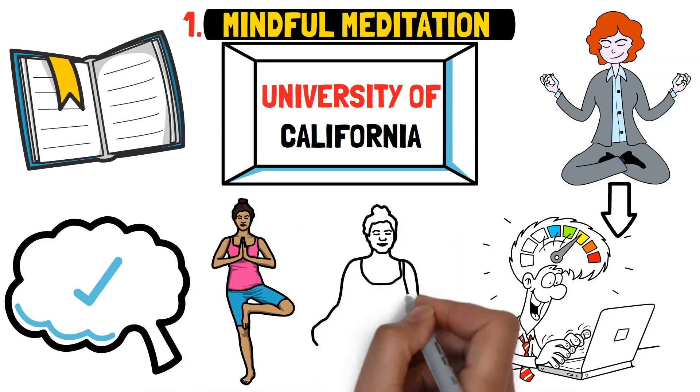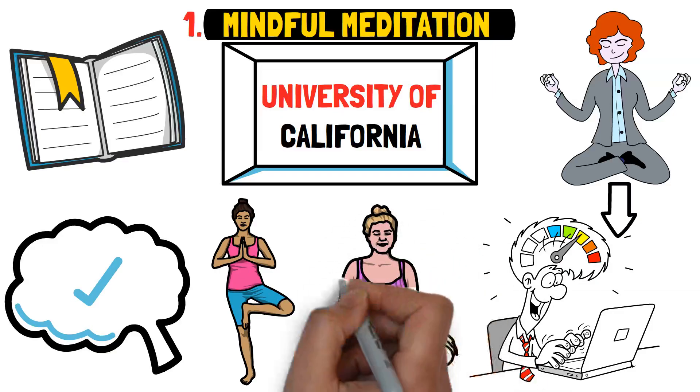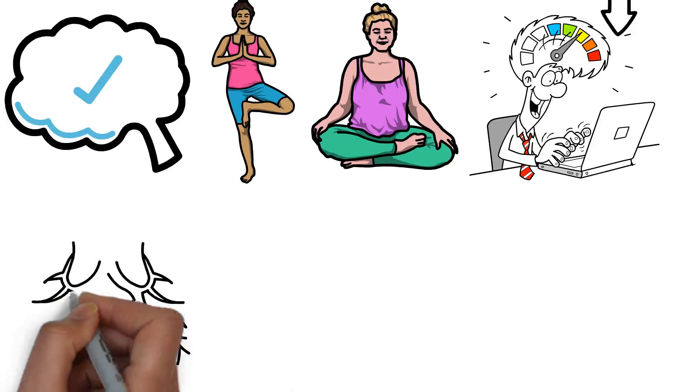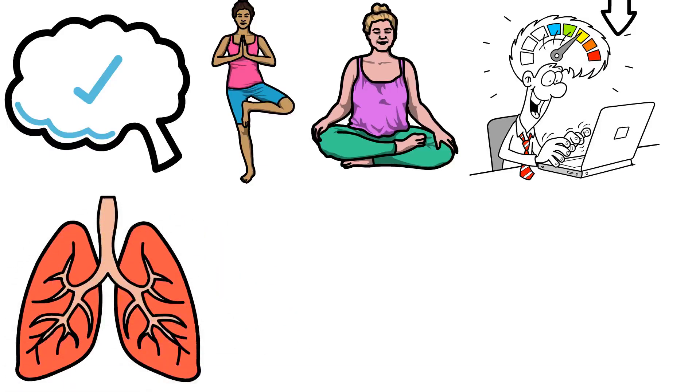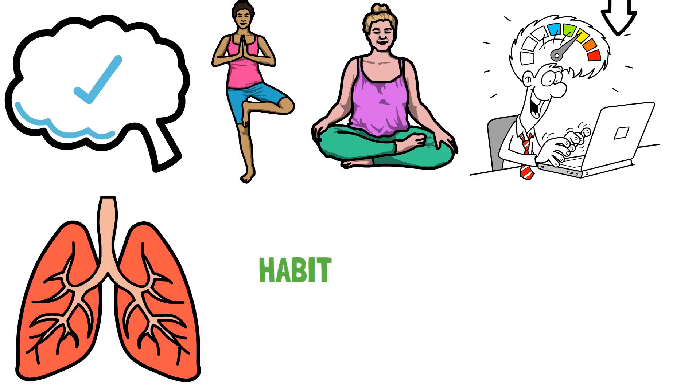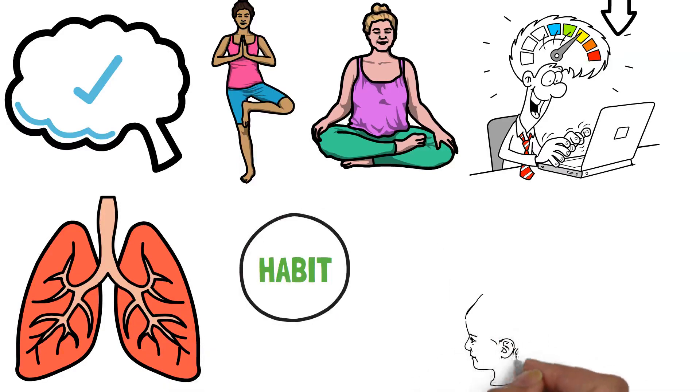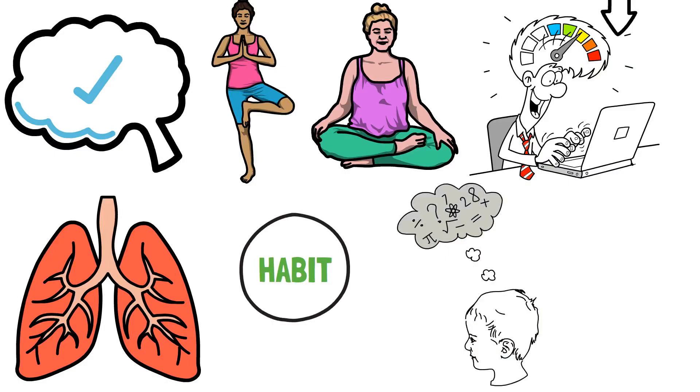Find a quiet space, sit comfortably, and focus on your breath. When your mind wanders, gently bring your attention back to your breath. As you make this a habit, you may notice improvements in your ability to recall information.